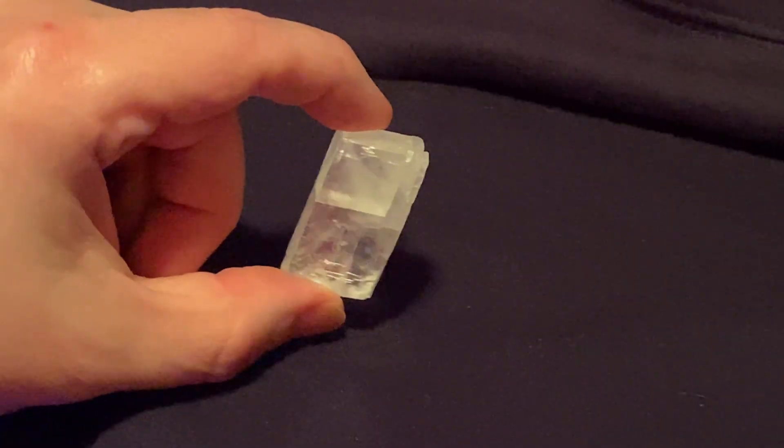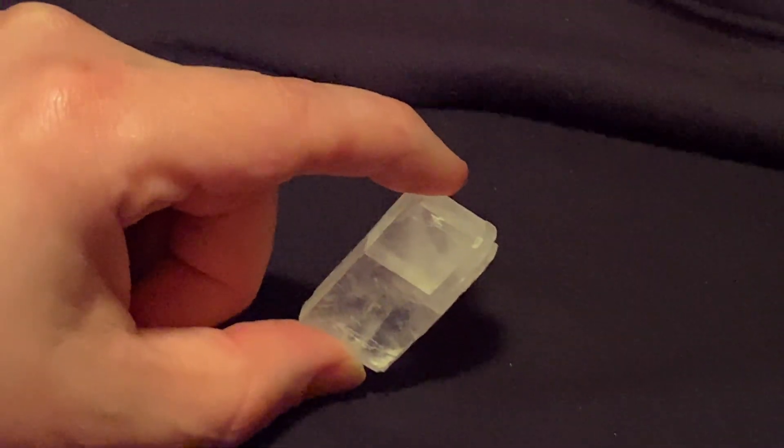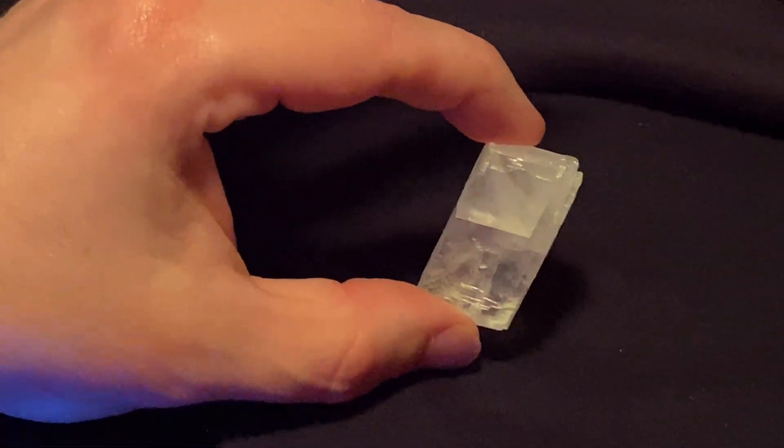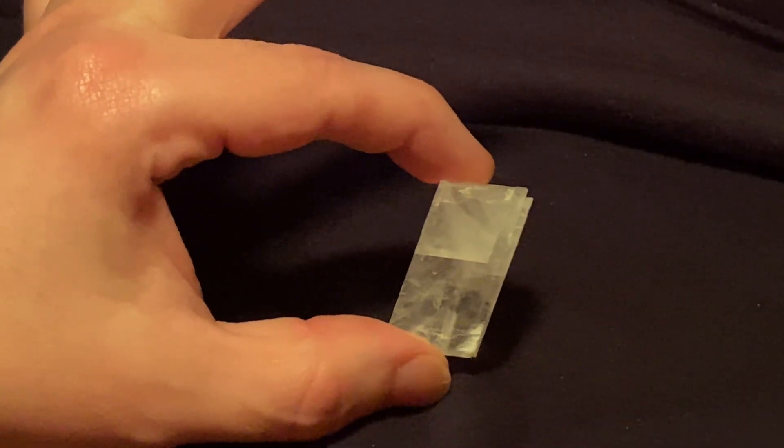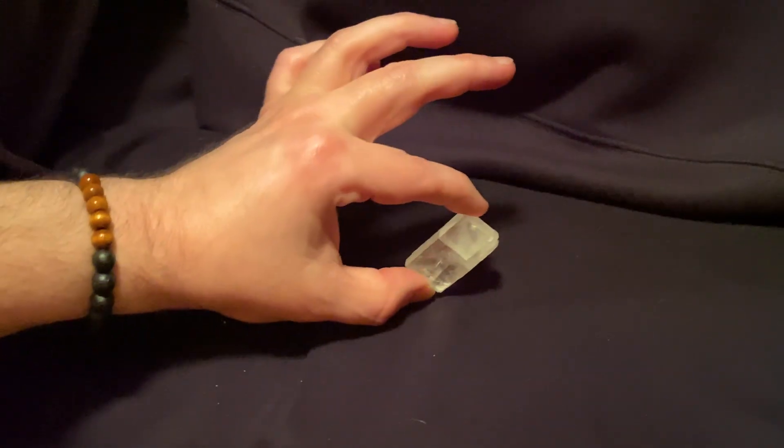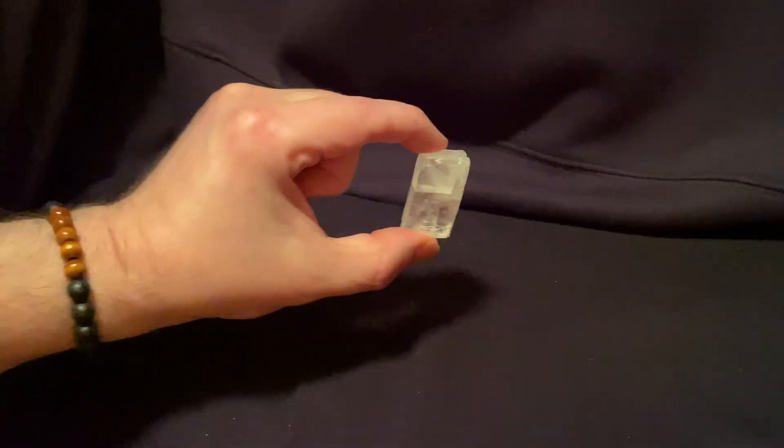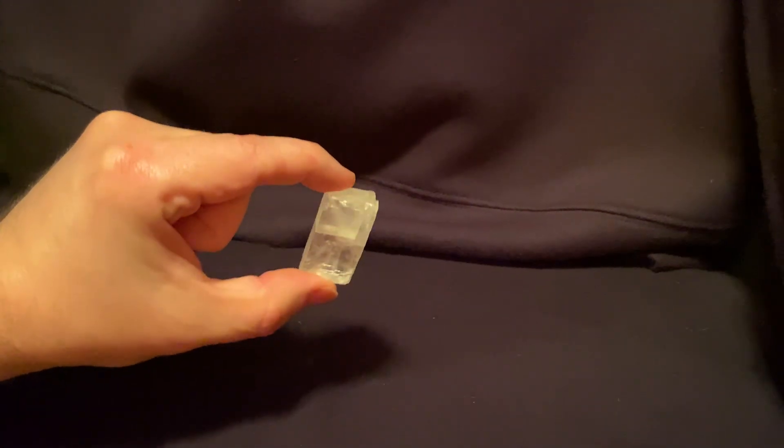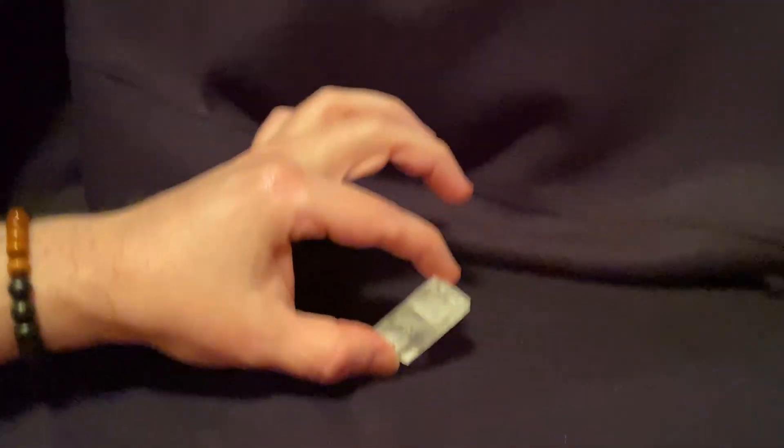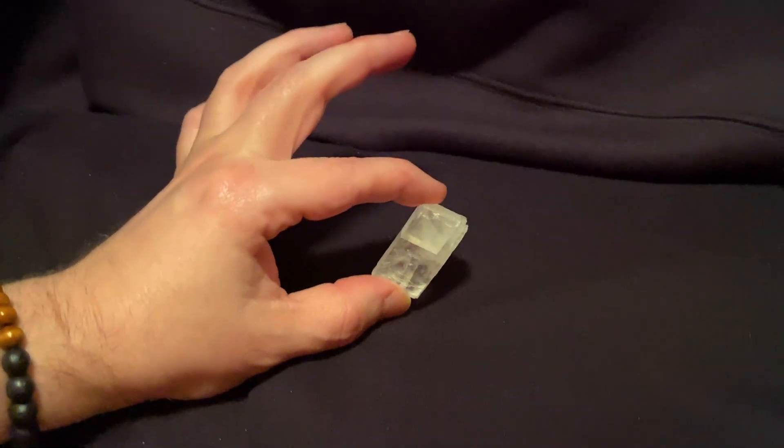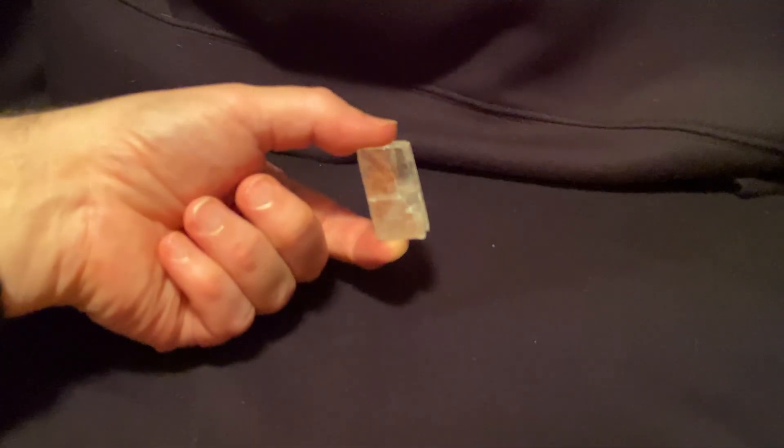It's called a sunstone because rumor has it back in the day, they, to navigate when it was cloudy, they would hold this up to the sky and then they could still see where the sun was. Vikings. So that's how the Vikings apparently navigated during the day with this stuff.